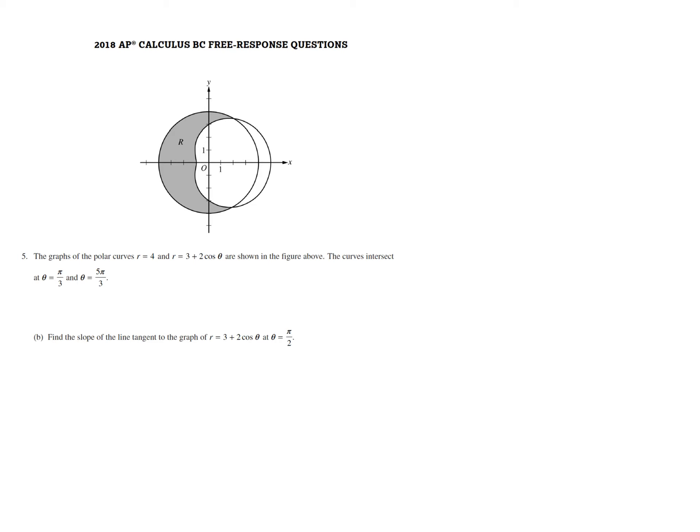For this pencast, we'll look at an alternative approach for finding dy dx for polar graphs. Our example is r equals 3 plus 2 cosine theta.